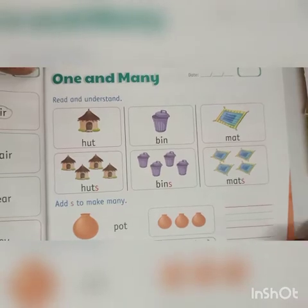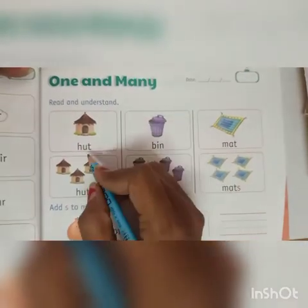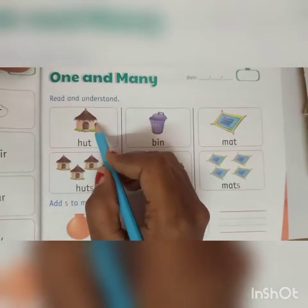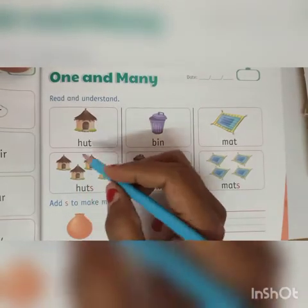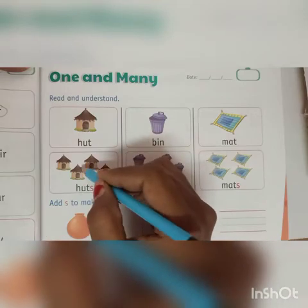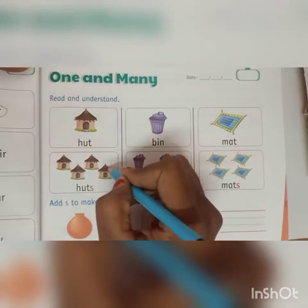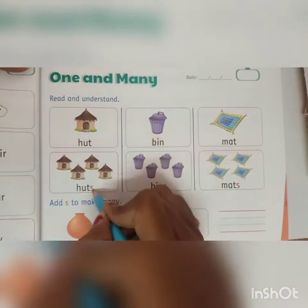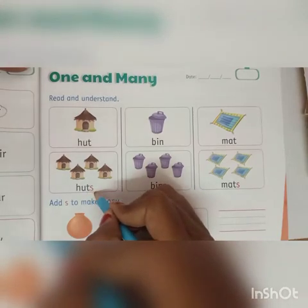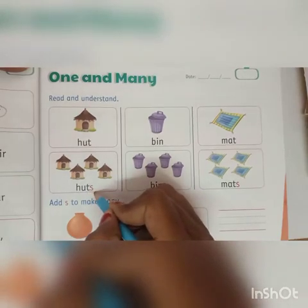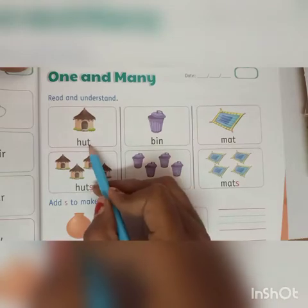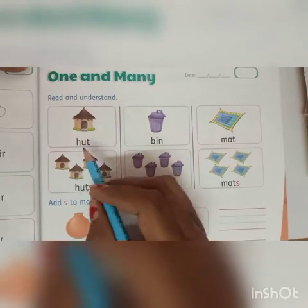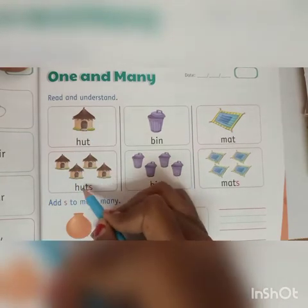Read and understand. Hut is one thing, that's why it is hut. When it becomes many, it becomes huts. We use S for huts. When many happens, we add S. This is hut, which is one thing. When it goes to many, it becomes huts.